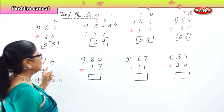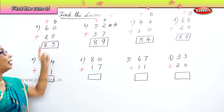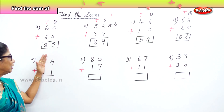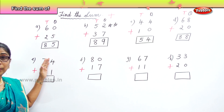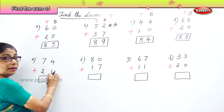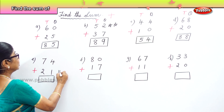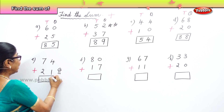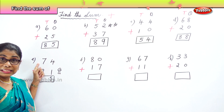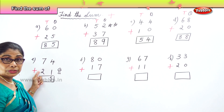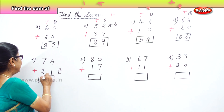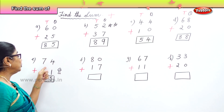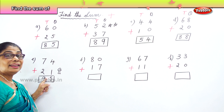Find the sum of 74 and 21. Let's look at the ones place. 4 ones and 1 one — that will give you 5 ones. Now let's look at the tens. You have 7 tens and 2 tens. 7 plus 2 is 9. You have 9 tens. So the sum of 74 and 21 is 95.